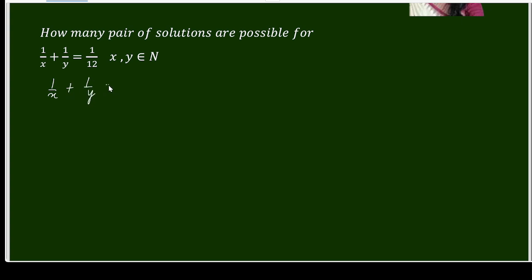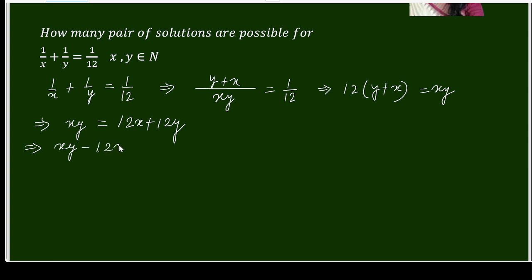So 1/x + 1/y equals 1/12. On simplifying the left-hand side, I will get (y + x)/xy equals 1/12. Cross multiplying, I am getting 12(y + x) equals xy. Now taking to one side, I will get xy equals 12x + 12y.